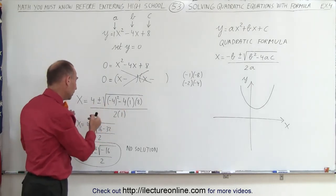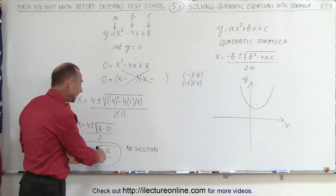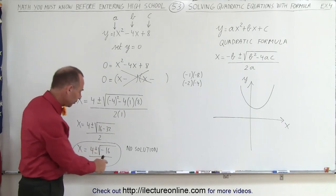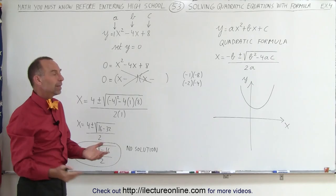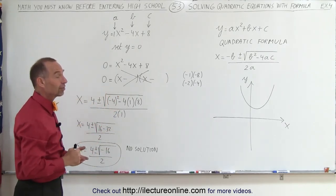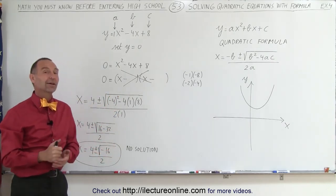But then when we use a quadratic formula, we end up with the square root of a negative number. Whenever the number underneath the radical is negative, there's no solution. That simply means that the graph does not cross the x-axis. And that's how we do that.